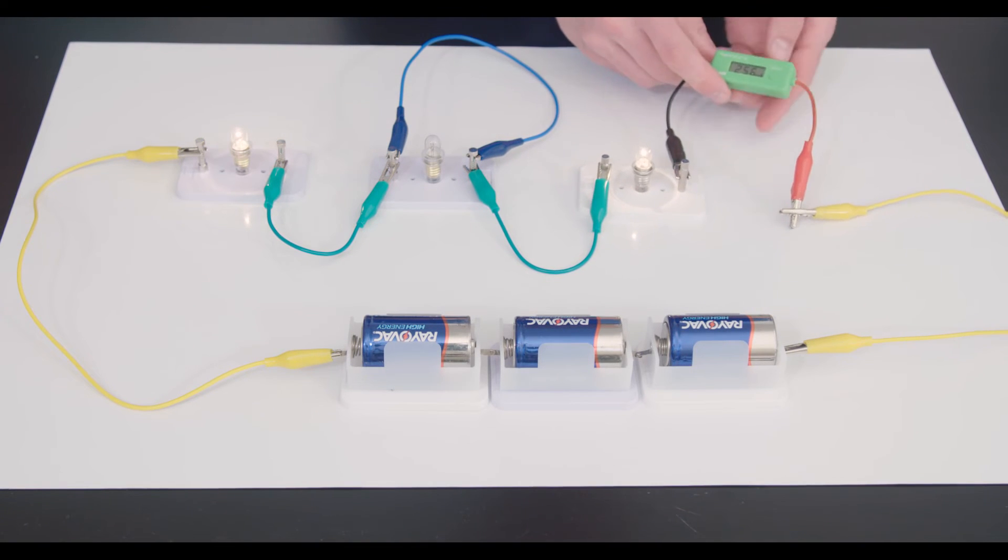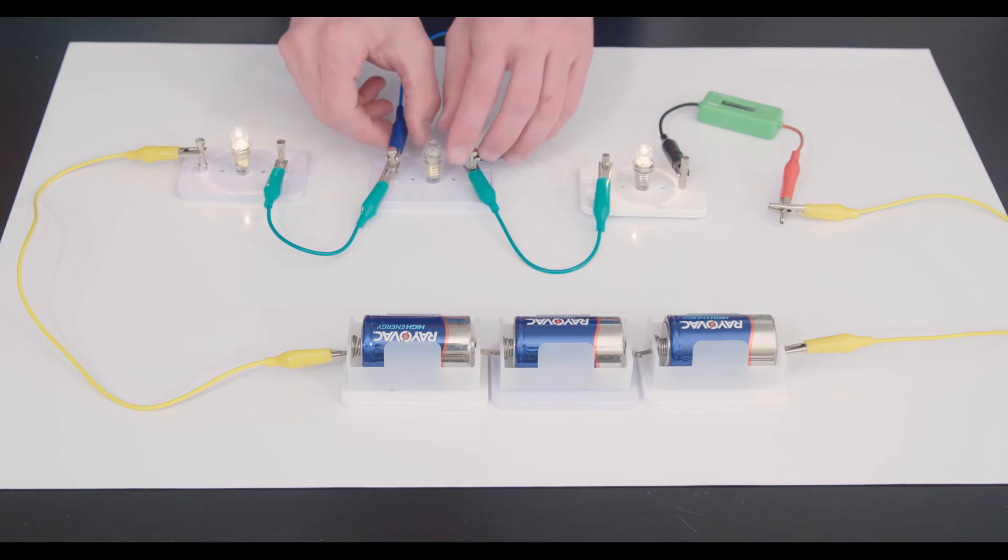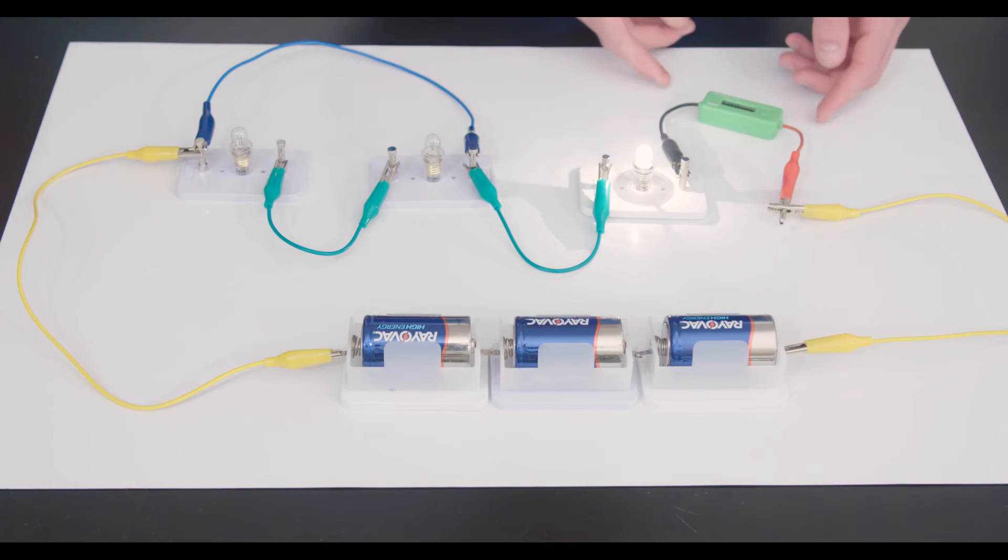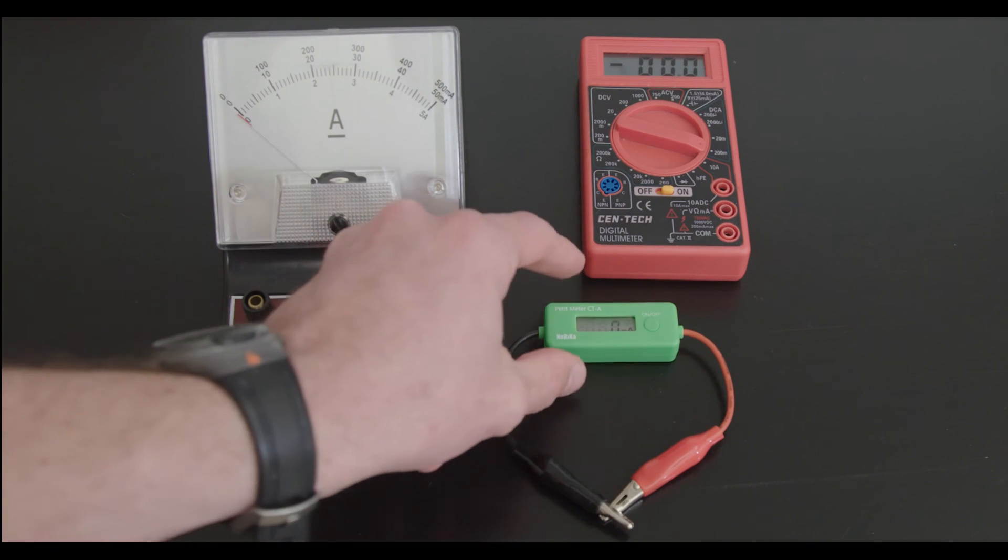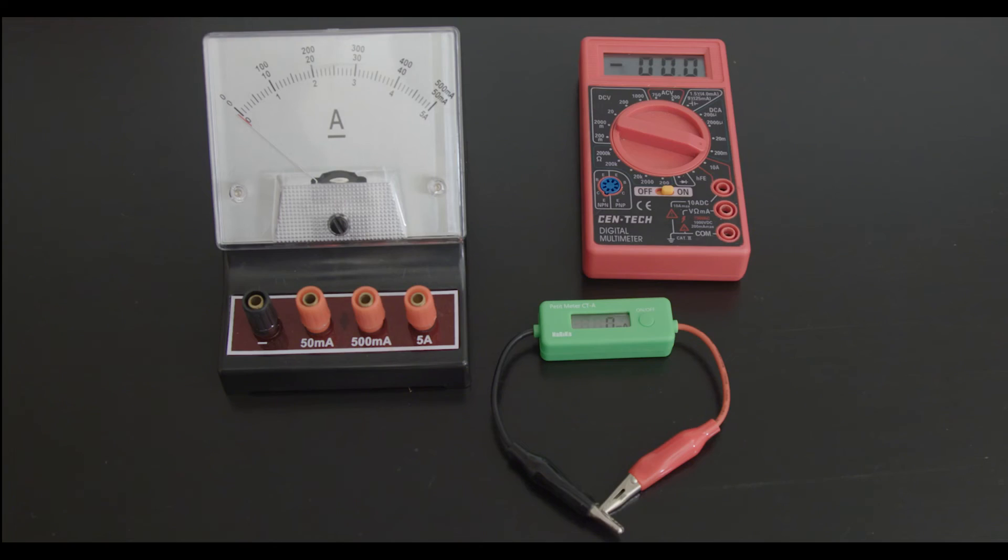For just one light bulb it is 355 milliamps, which is more still. You might be impressed by how small and convenient this ammeter is, not like those bulky confusing ammeters.